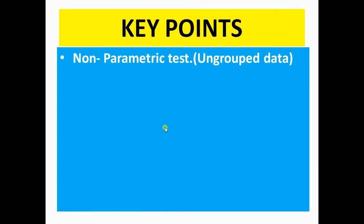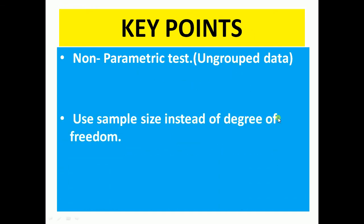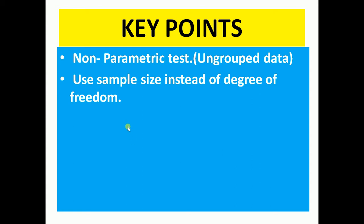The first key point is that Man-Whitney is a non-parametric test. We use it for ungrouped data. The second point is that it uses sample size instead of degree of freedom. In ANOVA, we use degree of freedom for interpretation, but here in Man-Whitney we don't have degree of freedom at the end. Sample size means number of cases.